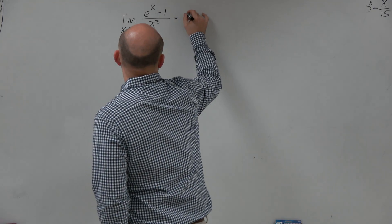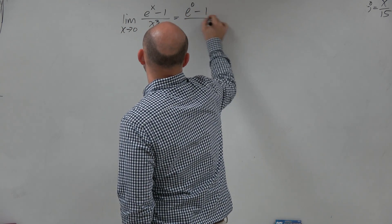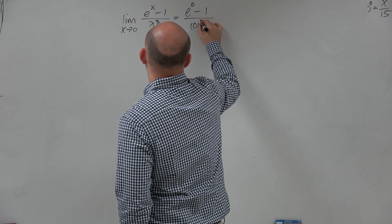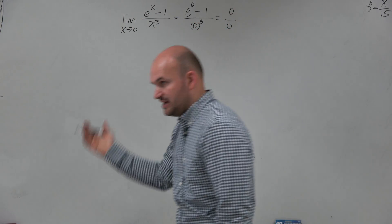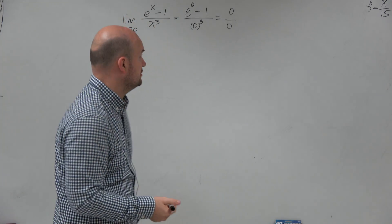So in this example, if we apply direct substitution, we could say that's going to be e to the 0 minus 1 over 0 cubed, and that's going to give us 0 over 0. So we have an indeterminate form, so let's go and apply L'Hôpital's rule.